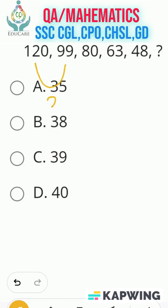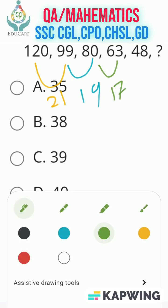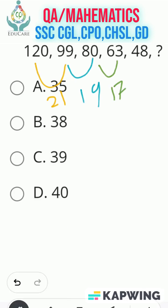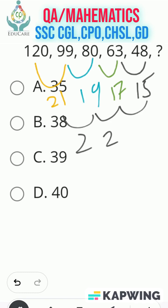Similarly, the difference between 99 and 80 is 19. Now the difference between 80 and 63 is 17. Again, the difference between 63 and 48 is 15. Now you can see a similarity between them — the difference decreases by 2 each time, which is the common pattern.